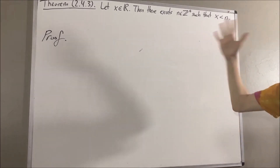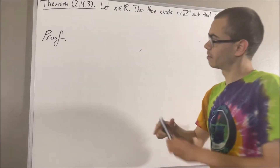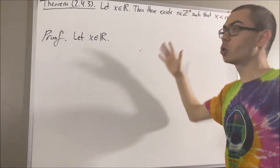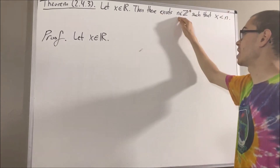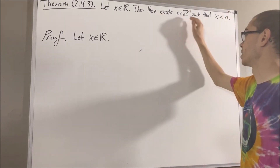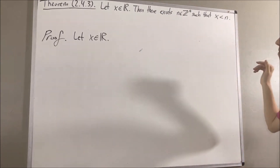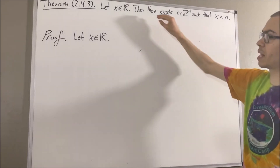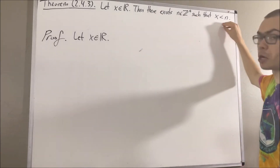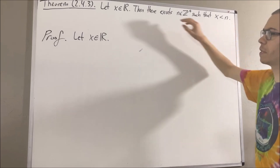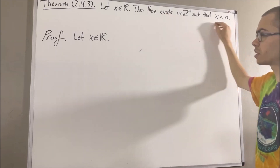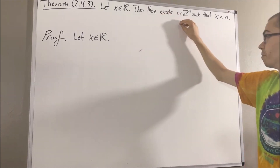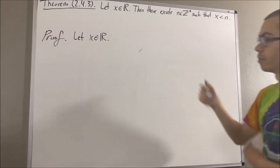To start out, let's give ourselves a real number x. And from here, our goal is to show that there exists a positive integer n such that x is less than n. Well, let's assume for a contradiction that this is instead false. What does it mean for this to be false? It means that for all positive integers n, x is greater than or equal to n.